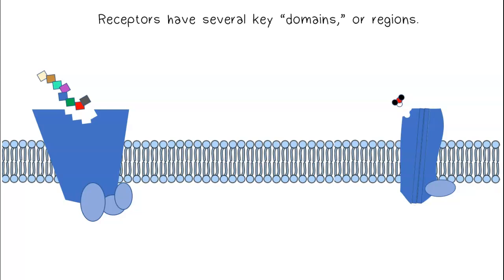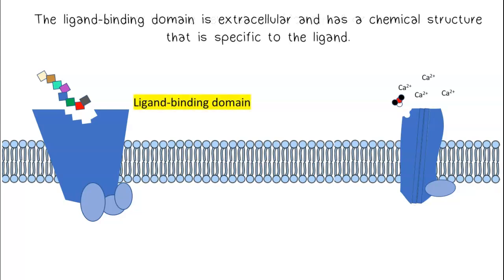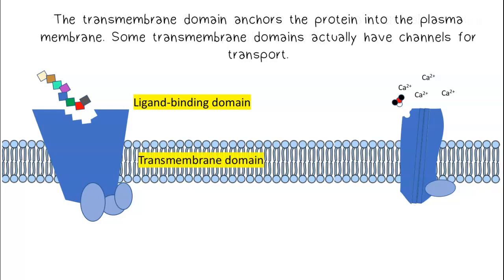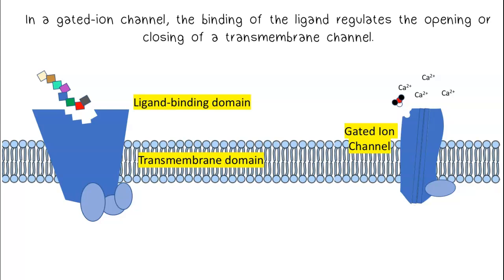Receptors have several key domains or regions. The ligand-binding domain is extracellular and has a chemical structure that is specific to the ligand. The transmembrane domain anchors the protein into the plasma membrane. Some transmembrane domains actually have channels for transport. In a gated ion channel, the binding of the ligand regulates the opening or closing of a transmembrane channel.